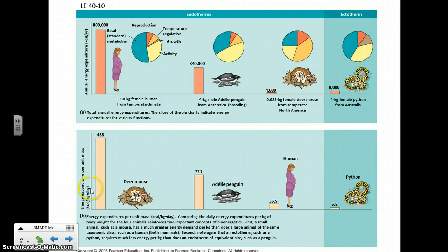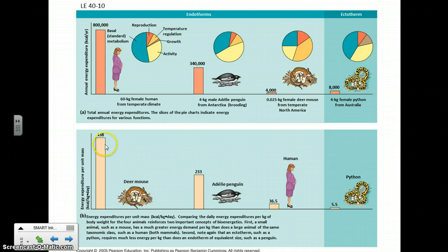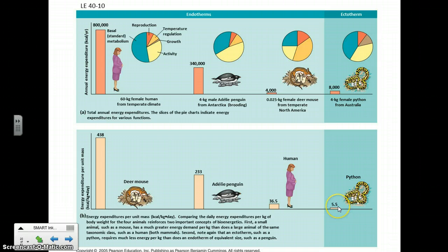On a per kilogram basis, the mouse has much greater energy needs per unit mass, so it has to eat a lot of food relative to its weight on a daily basis compared to the human, and definitely compared to the snake. On a per gram or per kilogram basis, the snake doesn't have to eat much at all — it has a really slow metabolism. That's why a large snake can eat a meal and then not eat for days and days, or even weeks and weeks, and it'll be just fine.